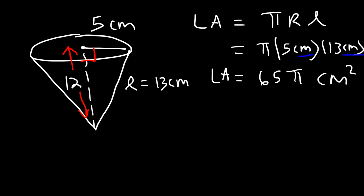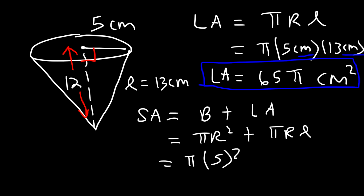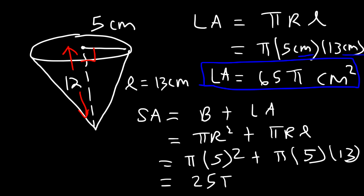Now that we have the lateral area, we can find the surface area: area of the base plus the lateral area, which is π r² + π r l. That's π times 5² plus π times 5 times 13. 5 squared is 25, and 5 times 13 is 65. 25 plus 65 is 90, so the surface area is 90π square centimeters.